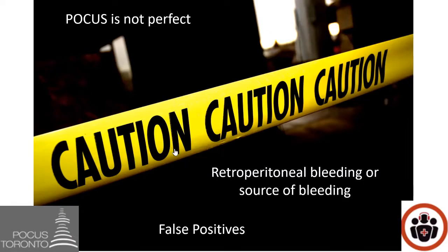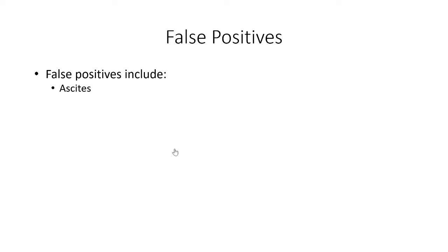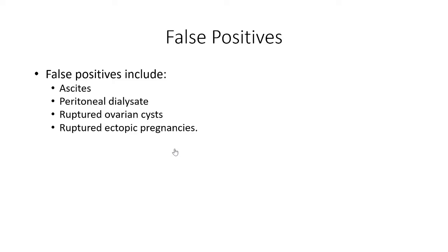Finally, there are false positives. These include ascites - a patient may have a medical disease with known ascites that looks like bleeding on ultrasound. Peritoneal dialysis patients may have remaining fluid in their abdomen, also causing a false positive. Females who rupture hemorrhagic ovarian cysts can appear to be bleeding from an organ. Ruptured ectopic pregnancies can also cause bleeding in the abdomen - if you see free fluid with a positive beta-HCG and abdominal pain in a pregnant patient, speak to your gynecologist urgently about a suspected ruptured ectopic pregnancy.